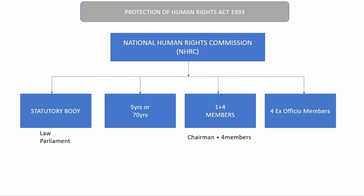What is the National Human Rights Commission? NHRC is a statutory body — a body which is set up by law. That means a bill is introduced in either house of parliament, passed by both houses, and becomes law. A similar procedure was followed in 1993, which led to the formation of the Protection of Human Rights Act, 1993.